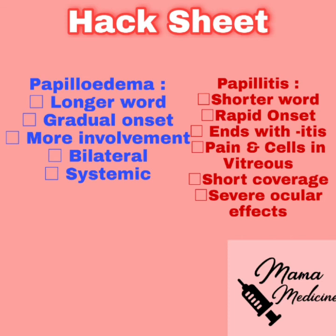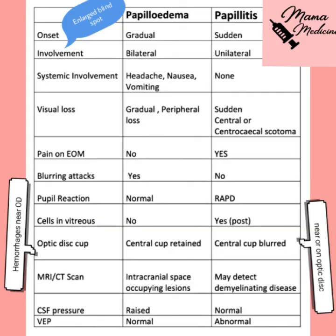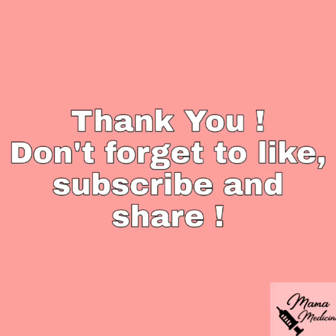For papillitis: rapid onset, pain with extraocular movements (the '-itis' gives it away), cells in posterior vitreous, no systemic involvement, abnormal pupillary reaction, and abnormal vision. Papillitis has more severe ocular effects but no systemic involvement, while papilledema has gradual onset with less severe ocular effects but systemic involvement including vomiting, nausea, headache, and transient blacking out attacks.